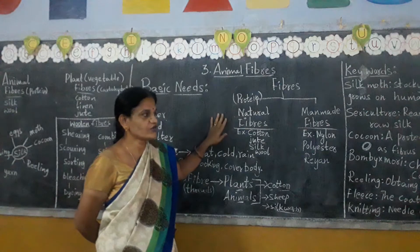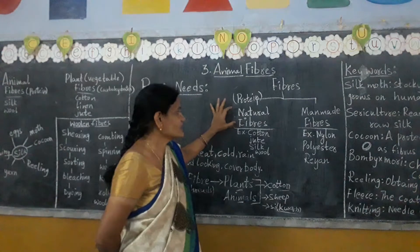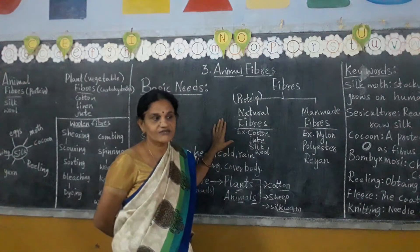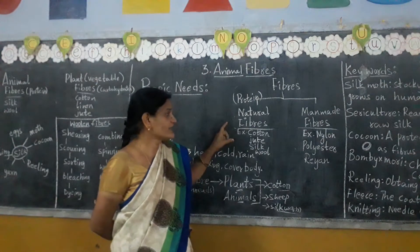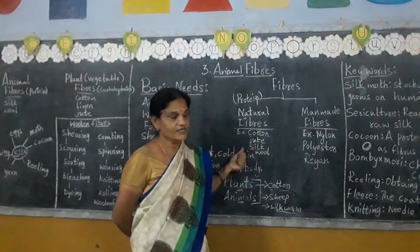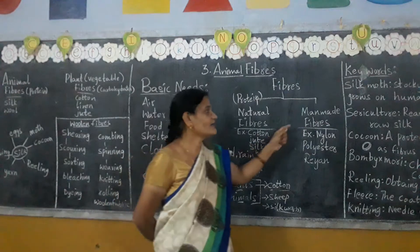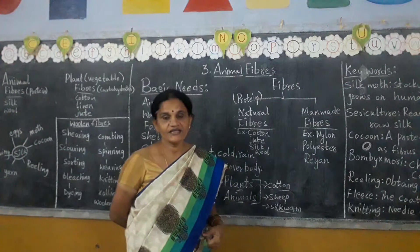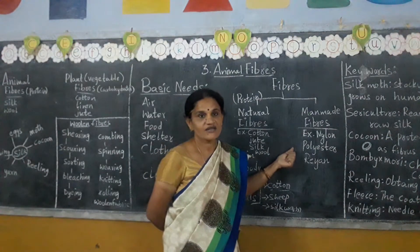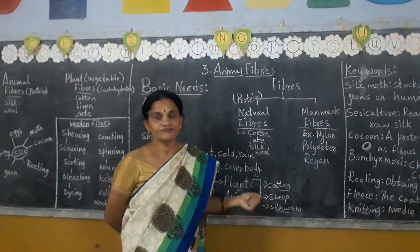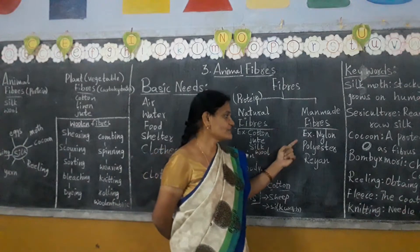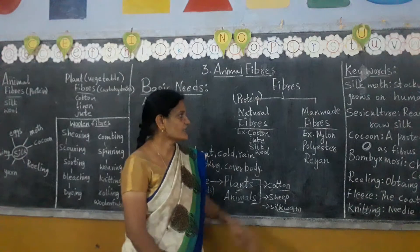Fibres are of two types: natural fibres and man-made fibres. Natural — in the name itself — we get from nature. God has given some gifts in nature. From nature only, we get fibres from plants and animals; they are called natural fibres. Examples: cotton, jute, silk, wool — all best examples of natural fibres. Man-made fibres are made in factories and industries. Examples: nylon, polyester, rayon. These fancy transparent types of clothes are called man-made fibres.